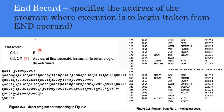Finally, the End record is the last row in the object program. It has two fields: the letter E in column 1 to indicate the end of the object program, and the remaining six spaces give the address of the first executable instruction in the object program, for example 1000. This completes the structure of the object code generated by the assembler.